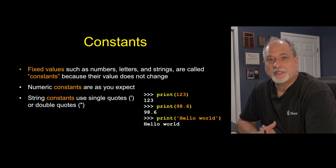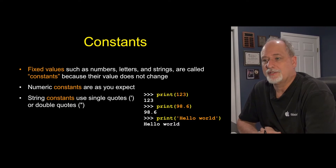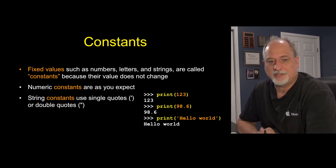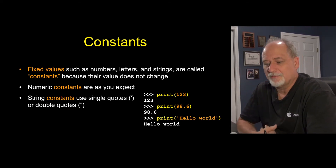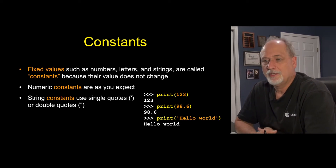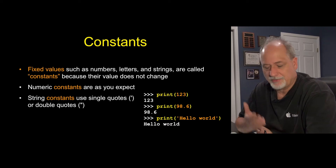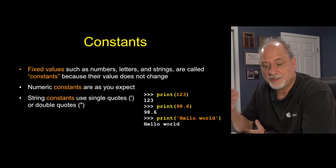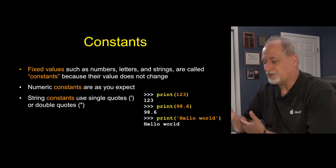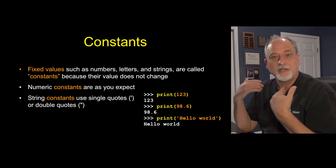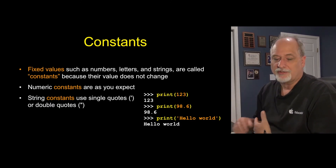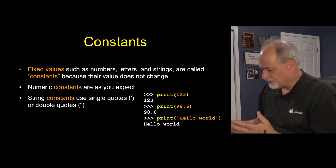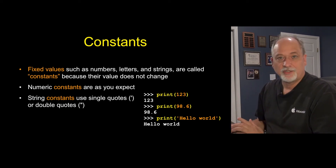The first thing we have to talk about is constants. These are just things we call constants because they don't change — there are numbers, strings, et cetera. We use them to start calculations, or if something is greater than 40 hours we're going to do something, so 40 is the constant in that situation. We have 123, we have 98.6, we have 'hello world' which is a string by enclosing it in quotes. We pass each of these to the print function and the result is that we see the output — print 123 prints out 123, print 98.6 prints it out. Without constants we can't write really much of anything.